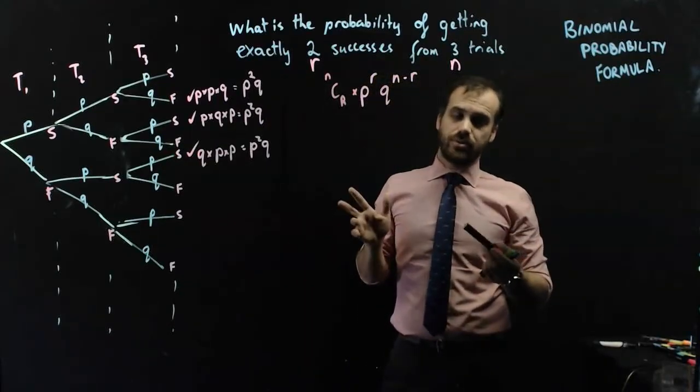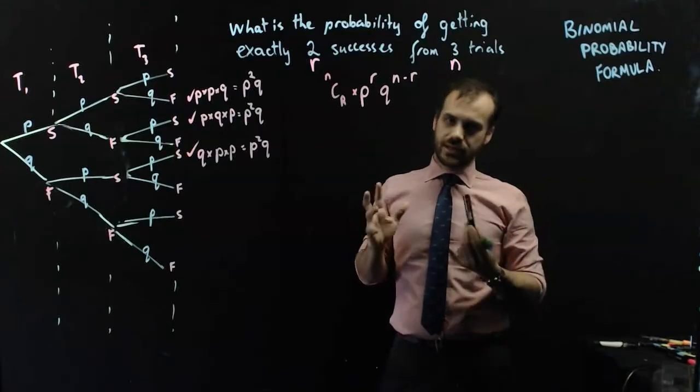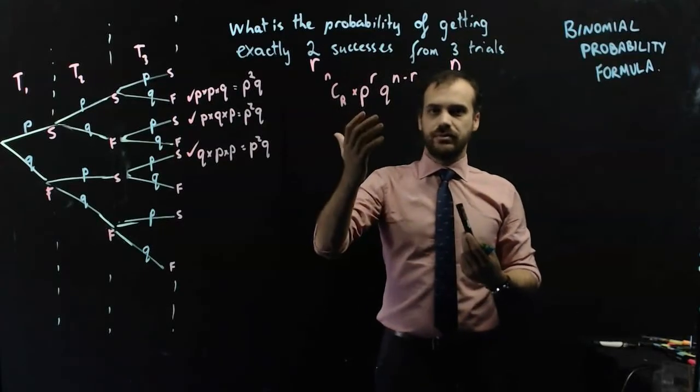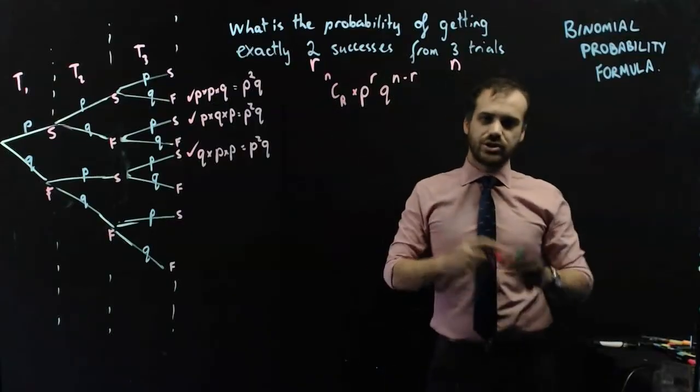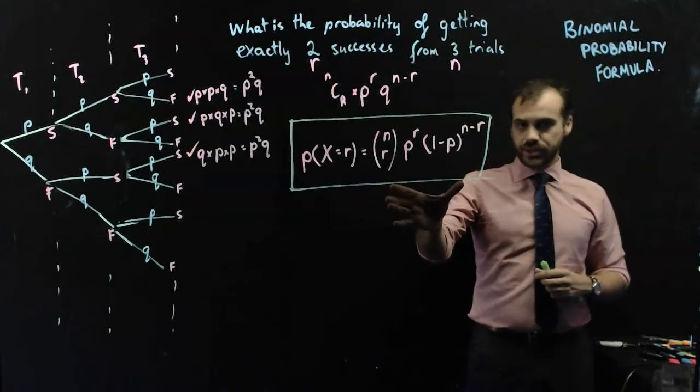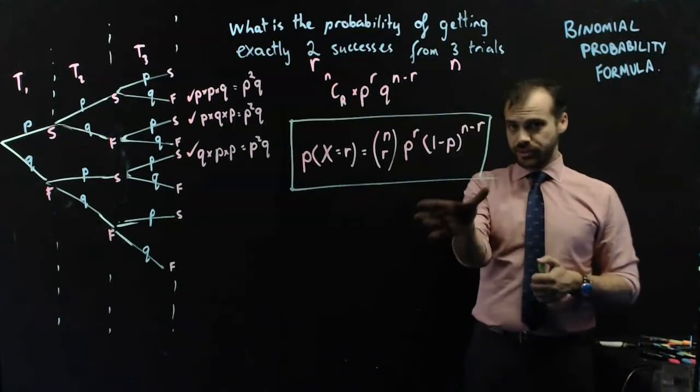And so now, this essentially is our binomial probability formula. Now, I'm going to tweak it slightly, but there's our basic binomial probability formula. Let's show it like the real one. So this is what you came here for, the binomial probability formula.